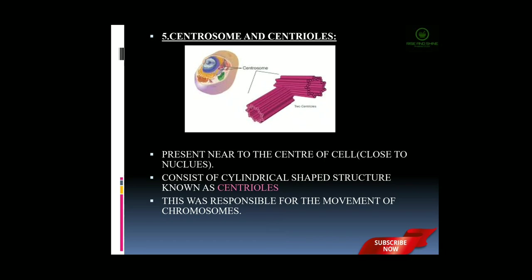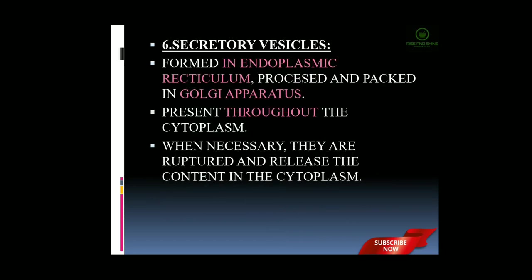Next part is secretory vesicles. The formation of secretory vesicles is carried out by two parts: the formation is initiated by the endoplasmic reticulum, and it is processed and packed by the Golgi apparatus. These secretory vesicles are present throughout the cytoplasm and consist of many secretory substances. When necessary, they are ruptured and release their contents into the cytoplasm.